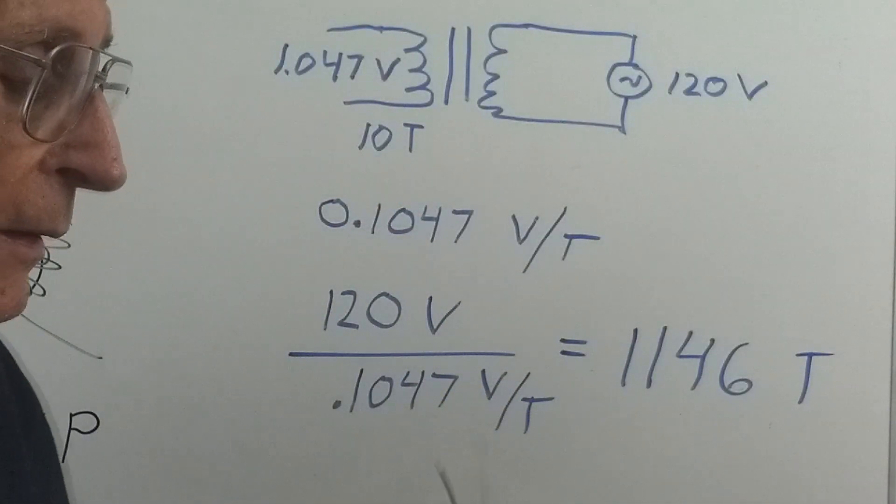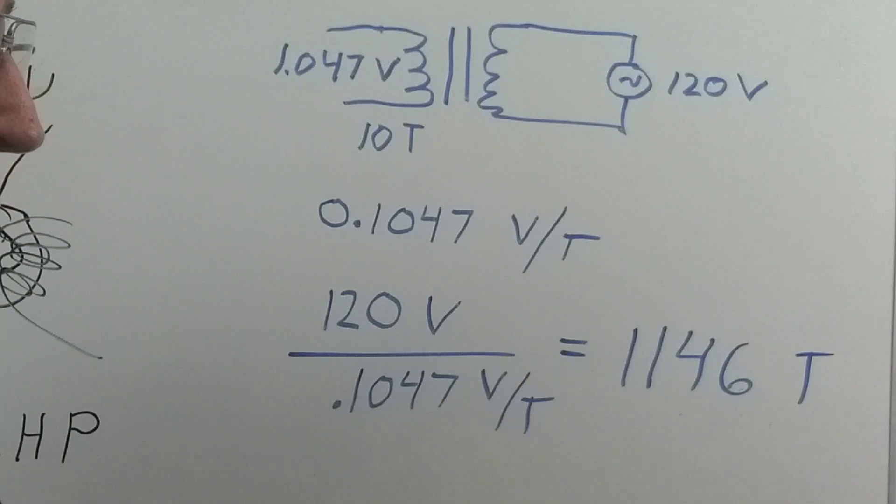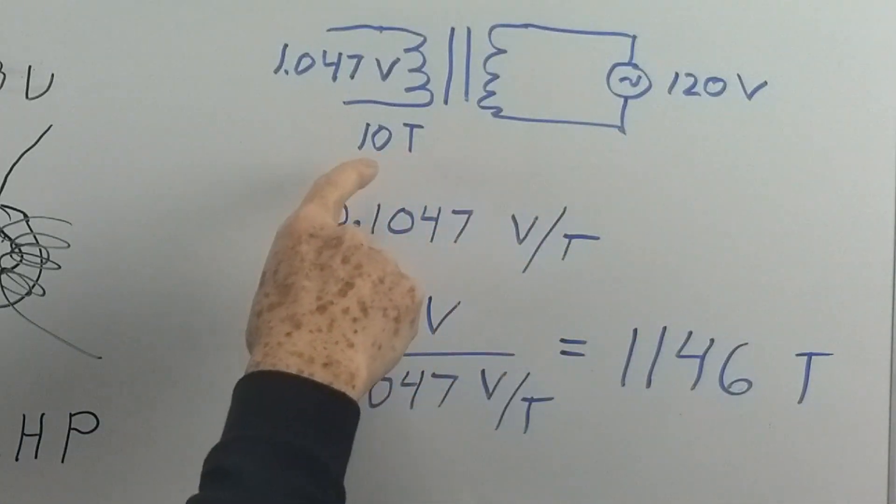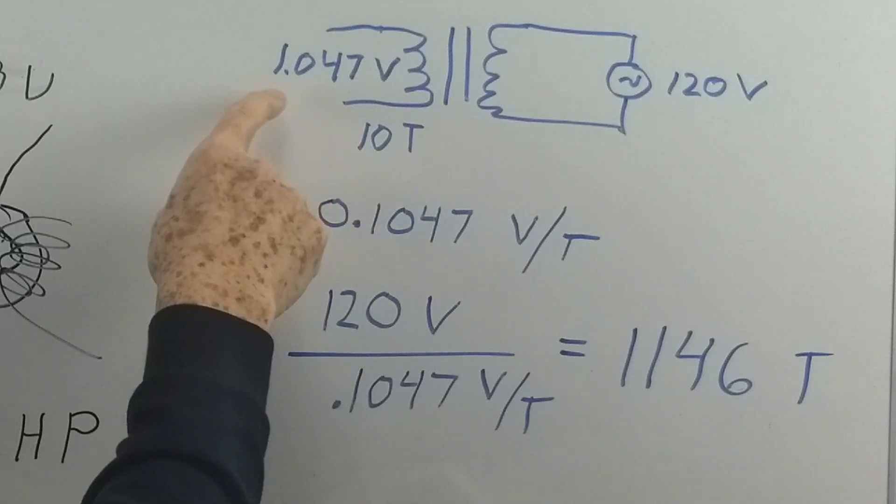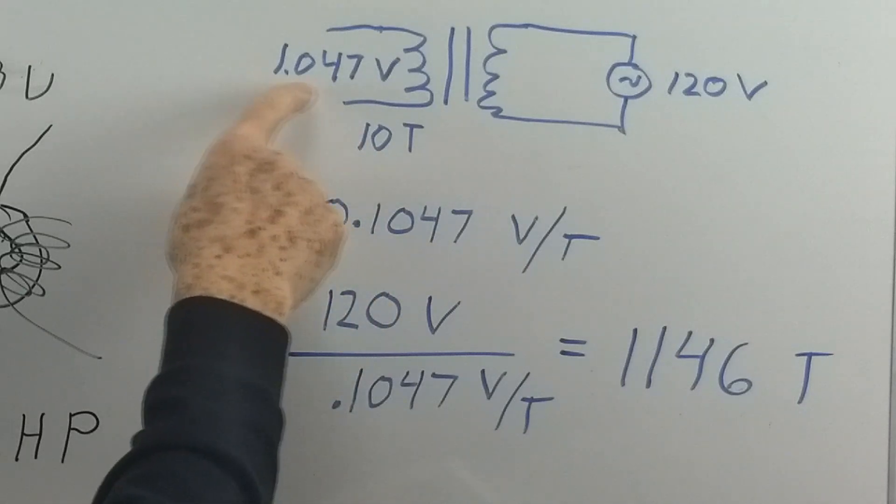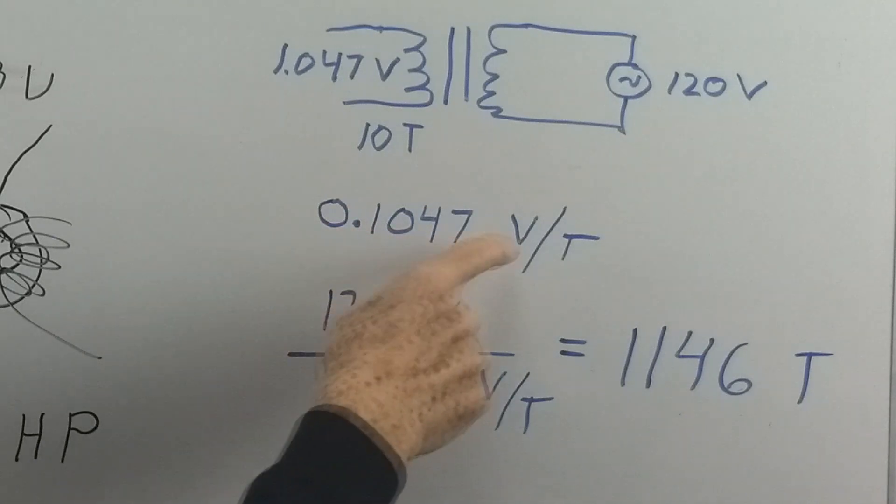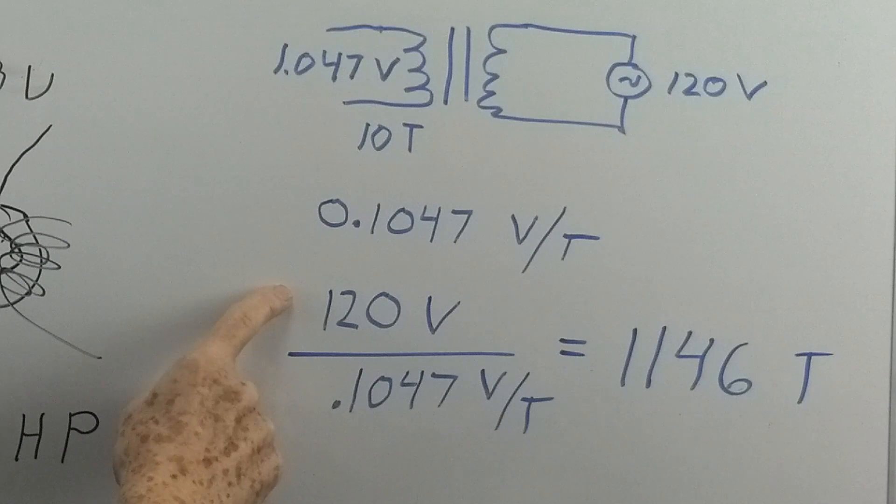I wanted to find out how many turns are on the primary of our small transformer. So I put 10 turns through our window here, and with 120 volts applied to the 10 turns, we get 1.047 volts. So that's around 0.1 volts per turn. So the 120 volts divided by that tells us roughly 1,100 turns on the primary.